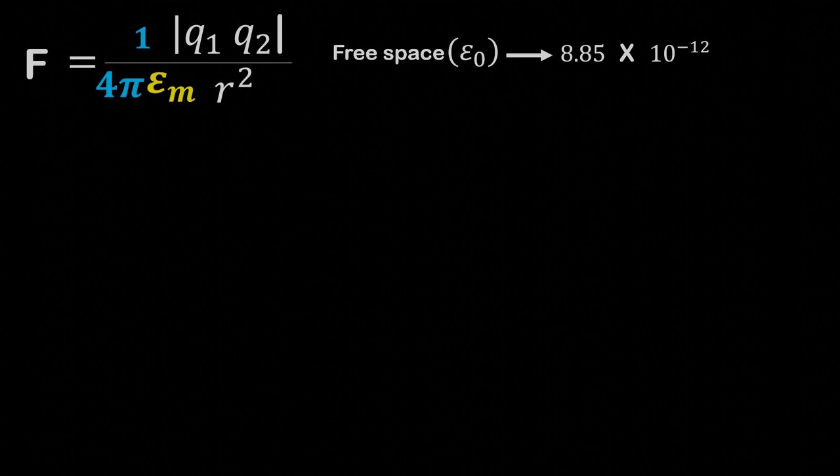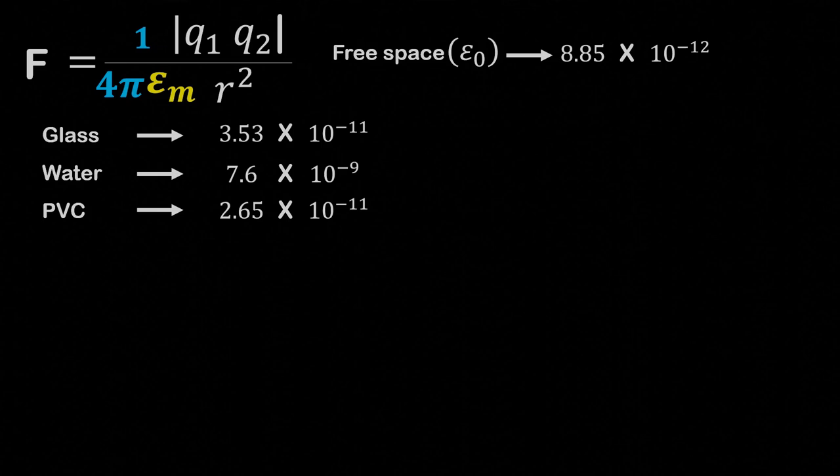Other materials such as glass, water and PVC have different permittivity values. Such complex values can be a bit difficult to remember.